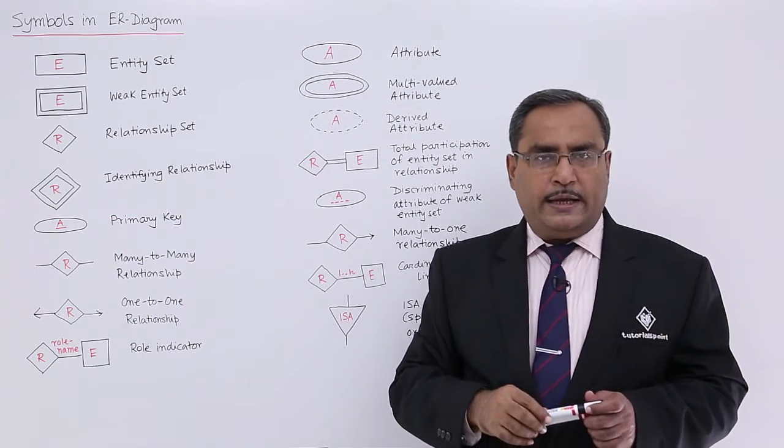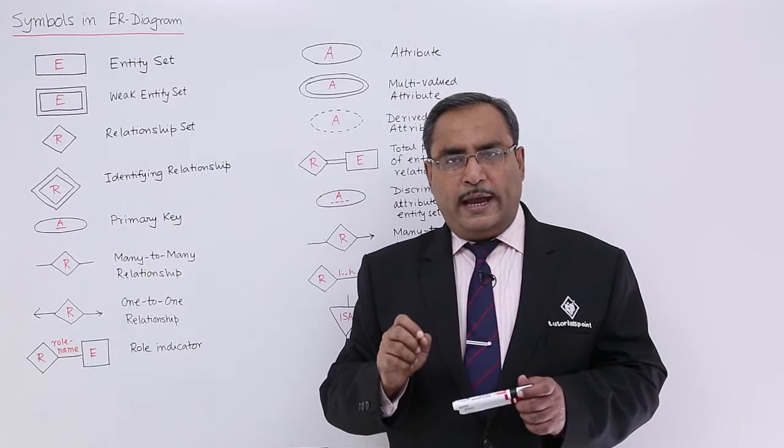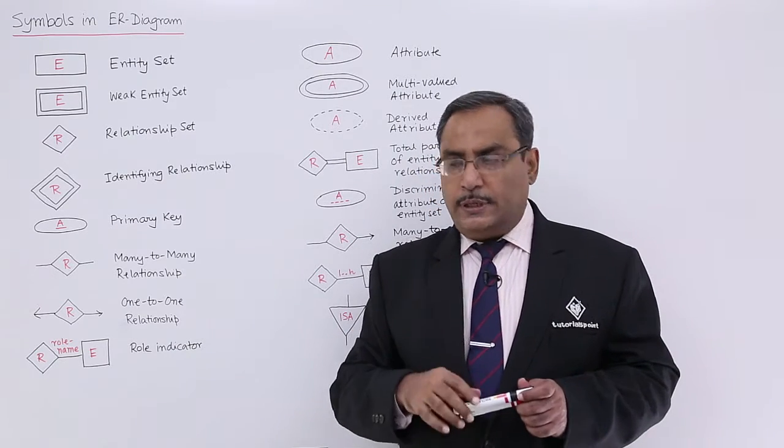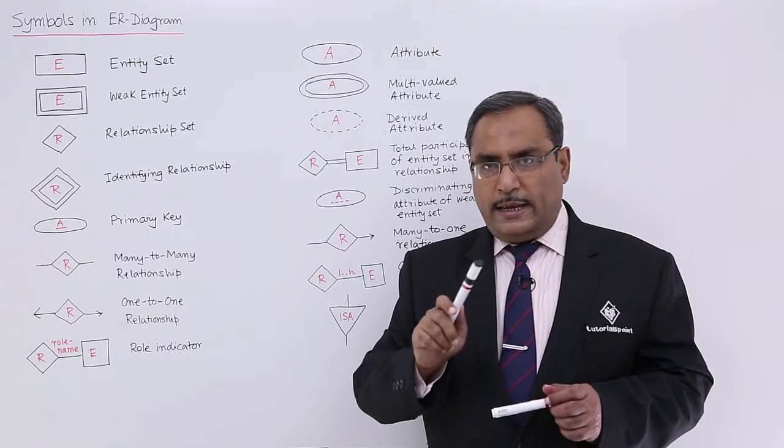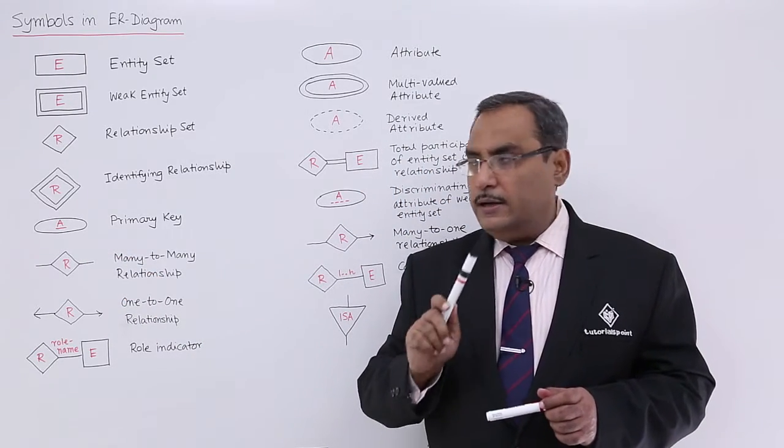In case of primary key, we know that the attribute will be enclosed within an ellipse, and it will have an underline. So the attribute name will be underlined.